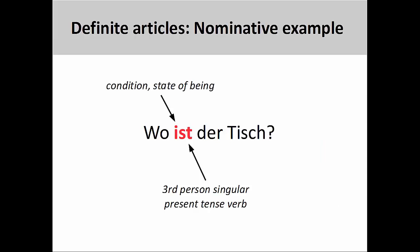As you continue your study of German, which has a more flexible syntax than English, you will find that definite articles will be essential for determining what noun is the subject of the sentence and what noun receives the action performed by the subject.